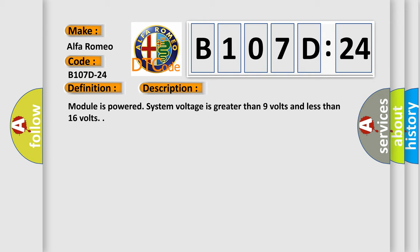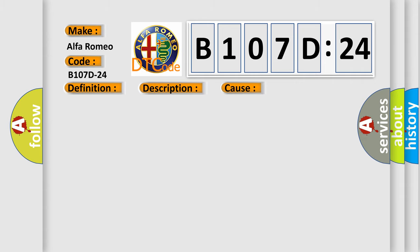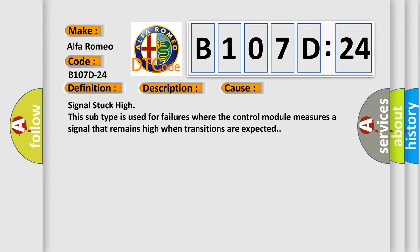Module is powered, system voltage is greater than 9 volts and less than 16 volts. This diagnostic error occurs most often in these cases: Signal stuck high. This subtype is used for failures where the control module measures a signal that remains high when transitions are expected.